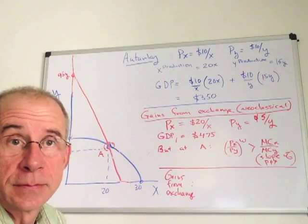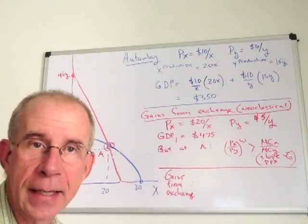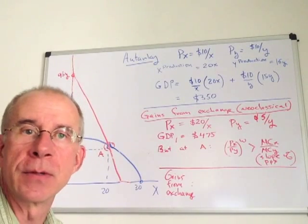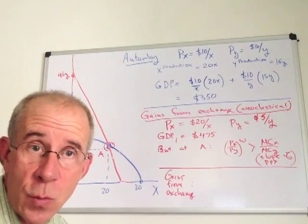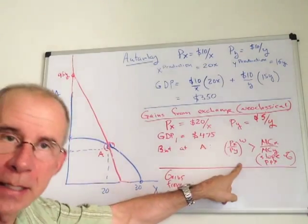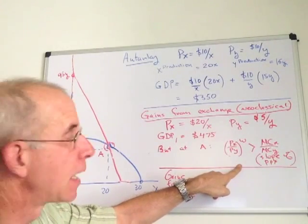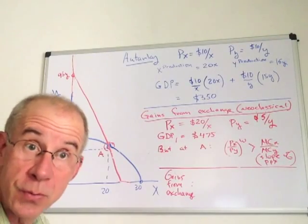What does that mean? It means that the relative price of X in the international market exceeds the relative cost of producing it domestically. So firms seeing that are going to say, look, if I expand my production of X, I will be able to make some profits. This is not a situation that I'm going to remain in. I'm not going to leave money on the table. So this is a signal for producers of X to produce more.